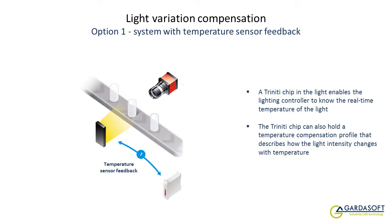Having discussed possible causes of light variation, we now look at three options to compensate for such situations within applications. The first option is based on temperature feedback. The GardaSoft Trinity system is an intelligent lighting platform that enables fixed and variable data about the light to be stored and then read by the lighting controller. The Trinity chip inside the light enables the controller to know the real-time temperature of the light and holds a temperature compensation profile. The output current is therefore automatically increased when the lighting temperature increases according to this stored profile, and a limit is applied to prevent thermal runaway.